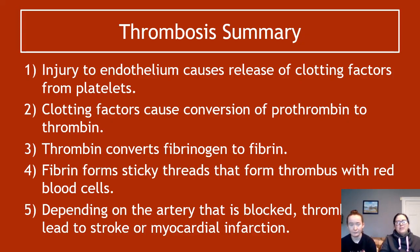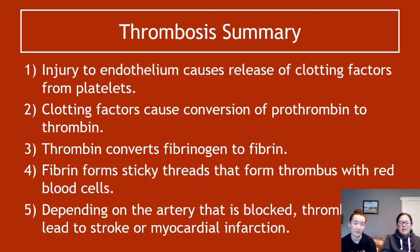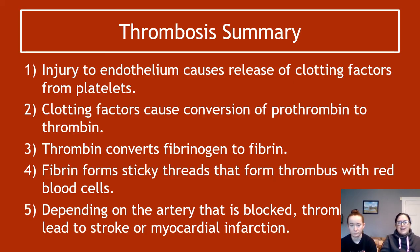To summarize thrombosis: step one, an injury to the endothelium causes release of clotting factors from platelets. The clotting factors then cause conversion of inactive prothrombin to active thrombin. Thrombin converts fibrinogen to fibrin. The fibrin forms sticky threads that form a thrombus, trapping red and white blood cells. Depending on which artery gets blocked, thrombosis or emboluses may lead to stroke — if it's an artery in the brain — or myocardial infarction — if it's the coronary arteries.